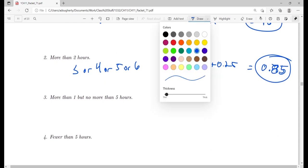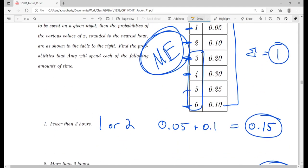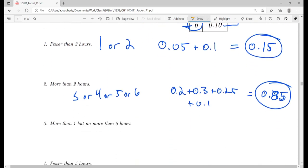More than 1 but no more than 5. In other words, more than 1 but at most 5 is this region here. We're talking 2 or 3 or 4 or 5. So 0.1 plus 0.2 plus 0.3 plus 0.25 is going to give us a total of also 0.85. So she's equally likely to spend more than 2 hours as she is somewhere between 1 and 5.